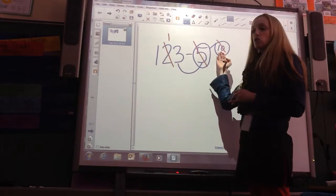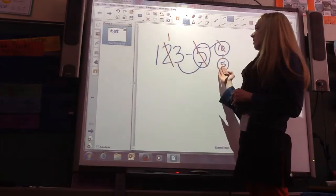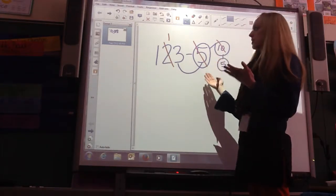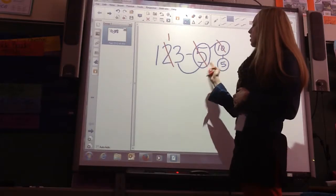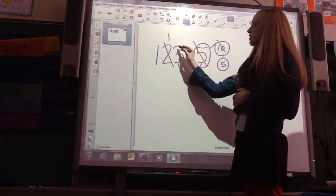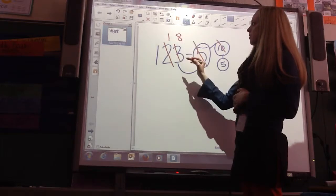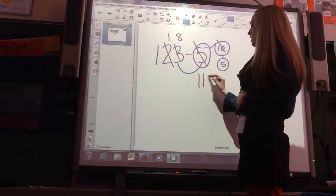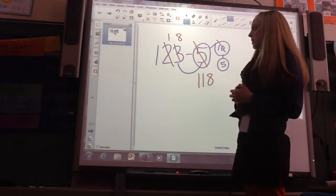I subtracted too many. Now I'm going to add the extra ones to balance it out. So, we're going to add the ones. So, 5 ones plus 3 ones is 8 ones. So, 118 is your difference.